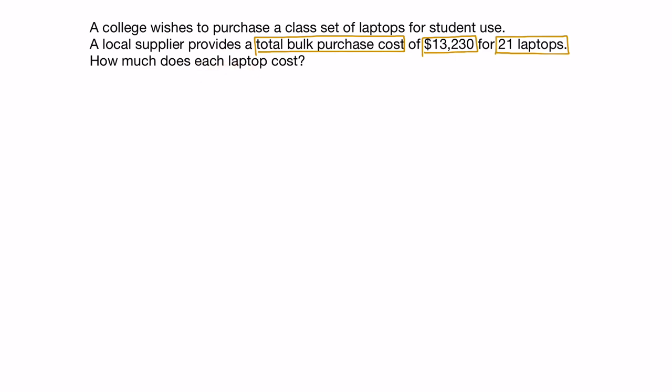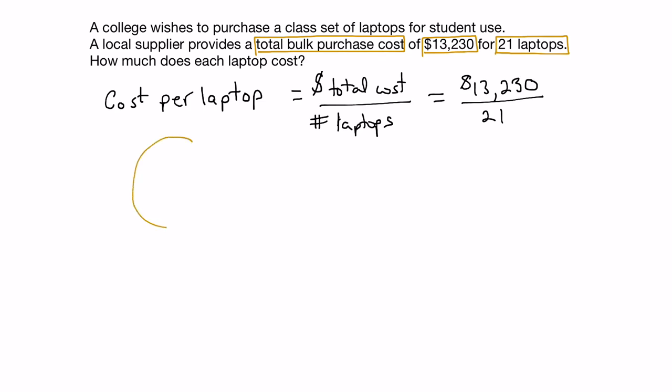Another way of saying that is the cost per laptop. The word per means division. So the cost per laptop would be the total cost in dollars divided by the number of laptops, which in our case is 13,230 divided by 21. You can also think of it this way: if I have the total cost represented by that circle, we're going to divide this into 21 equal parts to find out how much each laptop is worth.